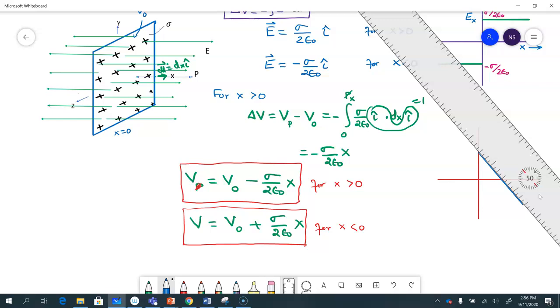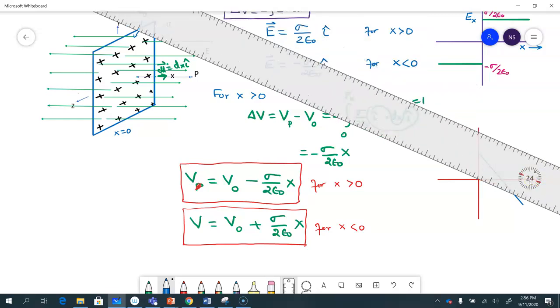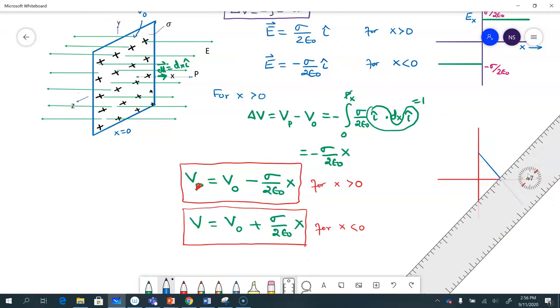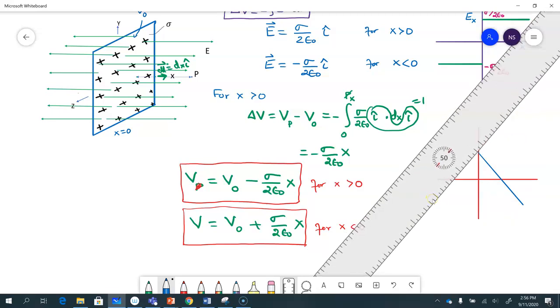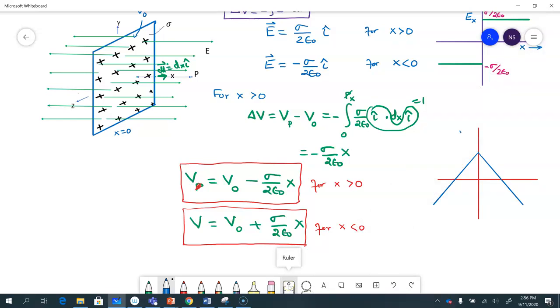It starts with V naught as a maximum where I started, and then now I need to do it for x negative. So that would be something like that, and it will drop as you go away. So this is how the potential drops in both directions. So now I can say this is V as a function of x, and this is V naught, that's the potential at the surface. And the electric field—it drops at a rate. The slope of this is negative sigma by 2 epsilon 0, and then slope here is positive sigma by 2 epsilon 0.